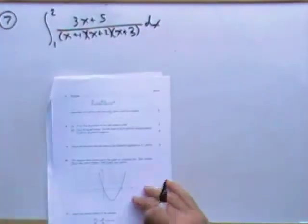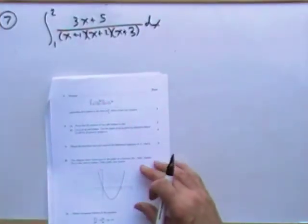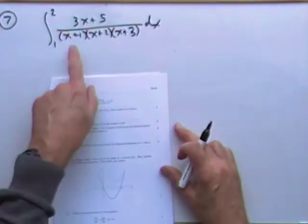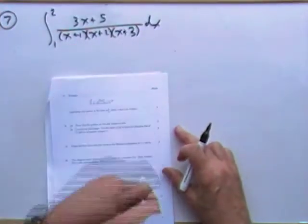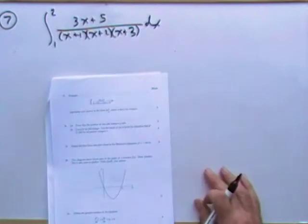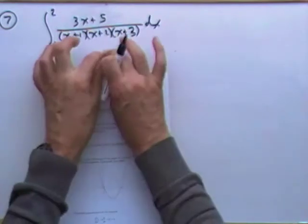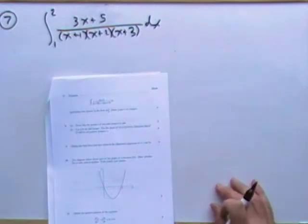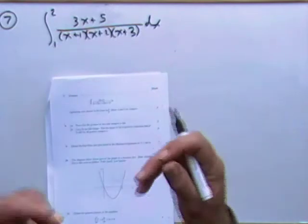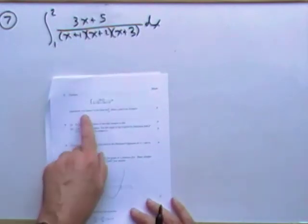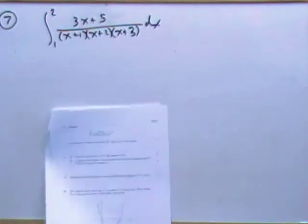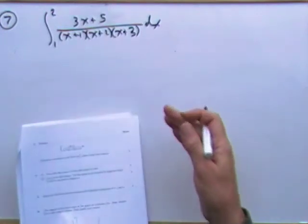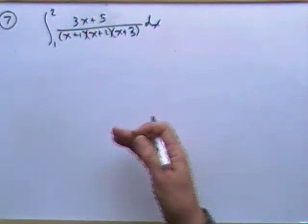For question seven, evaluate that integral. You spot it straight away with these three linear factors of the denominator — you know you're going to use partial fractions to split them into three logs, and then those logs can join together, just as it says: express the answer in the form log a over b. So it's partial fractions and then quickly integrate them into logs.